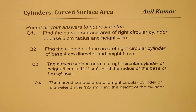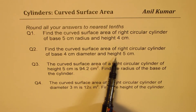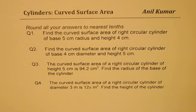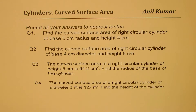Question number two: find the curved surface area of a right circular cylinder of base four centimeter diameter and height five centimeters. Question number three: the curved surface area of a right circular cylinder of height five centimeters is ninety four point two centimeter square — find the radius of the base. Question number four: the curved surface area of a right circular cylinder of diameter three meters is 12 pi meter square — find the height.